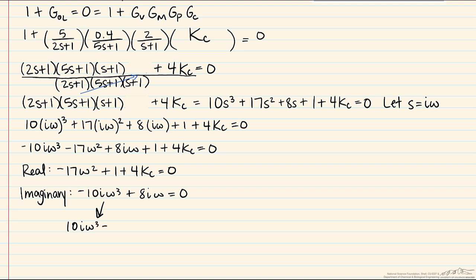If we move one of the terms over we will end up with 10i omega cubed equals 8i omega. One of the omegas drops out, it's zero, it's a negligible answer for this, having a frequency of zero doesn't really help anything. The i's will cancel, so this leaves us with omega squared equals 8 tenths, or that omega is the square root of 8 over 10, which is approximately 0.894.